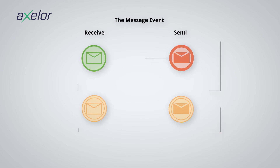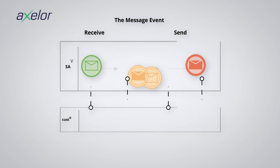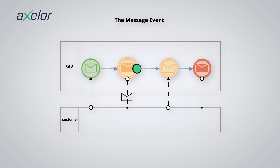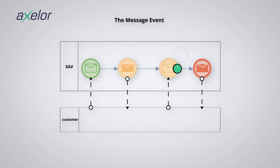In a more complete example, as soon as a message is received from another process, a token is created and the process instance is launched. In turn, the process sends a message and remains in a pending state. Upon receipt of a message, the token moves forward before terminating the process, while the process will ultimately send information to another process.